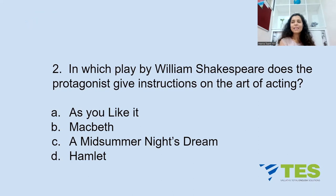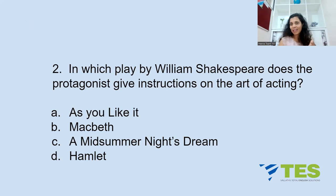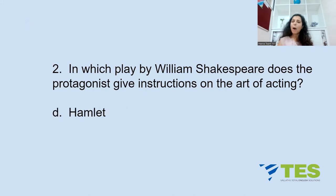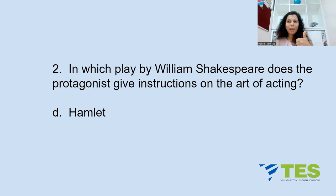Question 2: In which play by William Shakespeare does the protagonist give instructions on the art of acting? A: As You Like It, B: Macbeth, C: A Midsummer Night's Dream, or D: Hamlet. The protagonist is instructing the actors — the players — in Option D, Hamlet. Remember Act Three, Scene Two: Hamlet is advising the players.